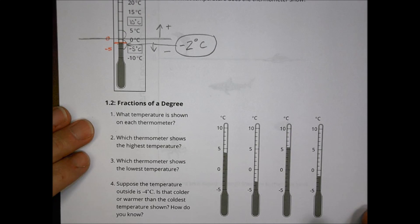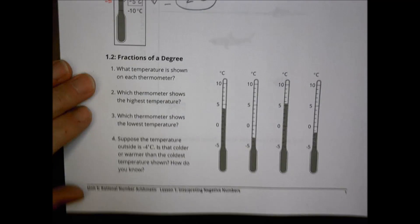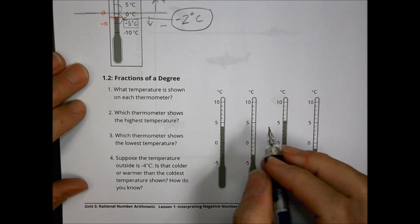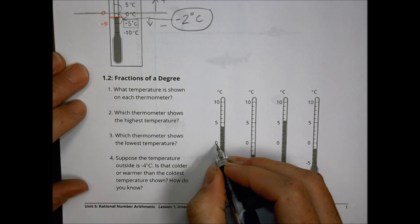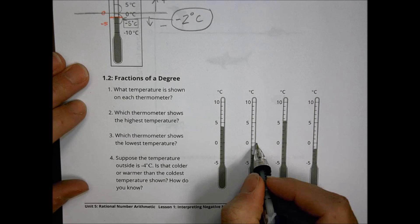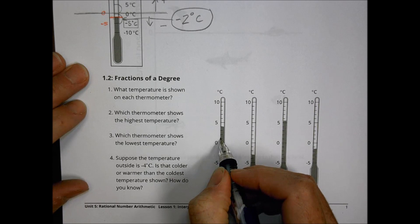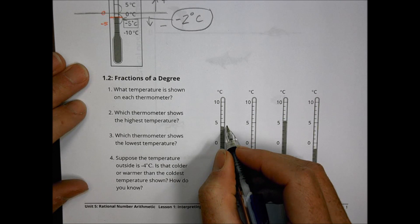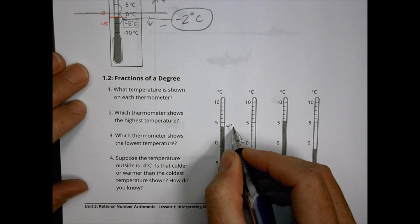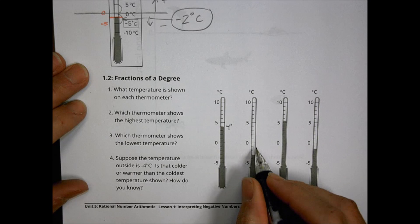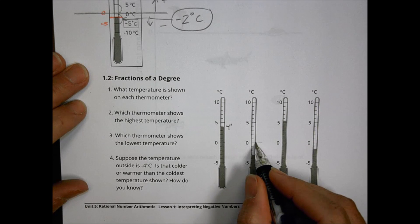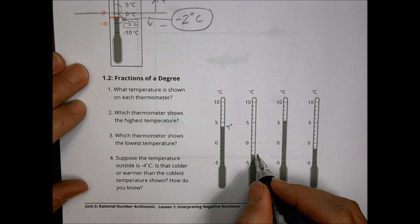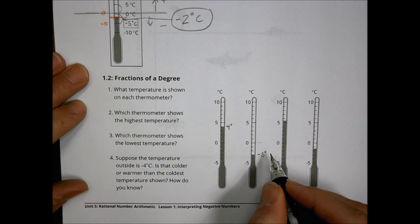Moving down, we have fractions of a degree. The question asks: what temperature is shown on each thermometer? They're all the same size, starting at 0 and going up in increments of 1. The first thermometer is at 4 degrees Celsius. The second one is below 0 — going down 1, 2, 3 — so we're at negative 3 degrees Celsius.